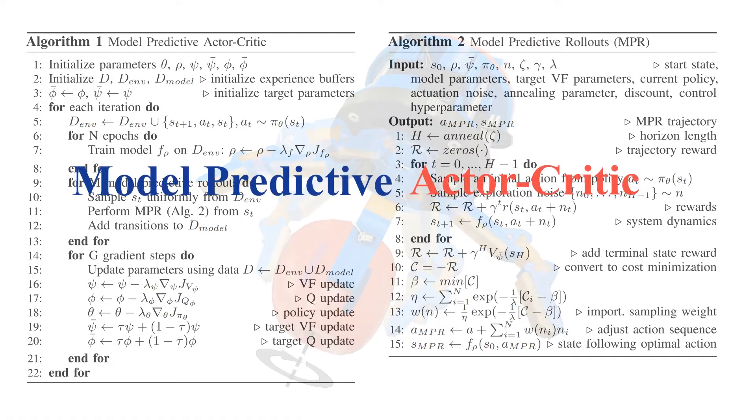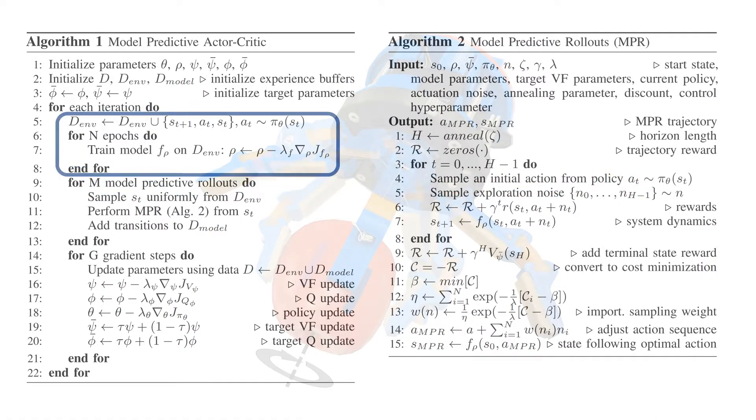MOPAC requires an actor-critic model-free algorithm like SAC to collect transitions and use them to learn the model. We then use the model to execute our model predictive rollouts, starting from a random initial true state.